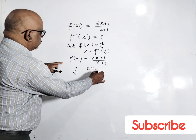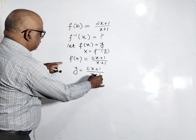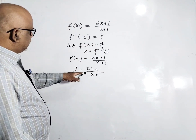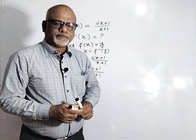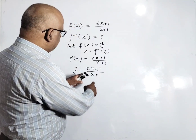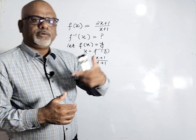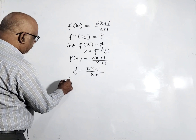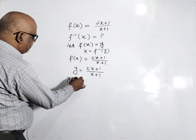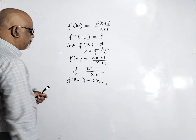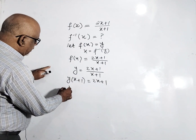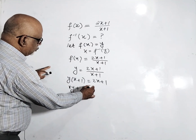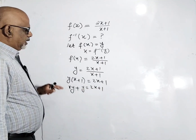Now we have to subject x — that means we have to separate x in terms of y. We shift: y times (x plus 1) equals 2x plus 1. Expanding, we get xy plus y equals 2x plus 1.